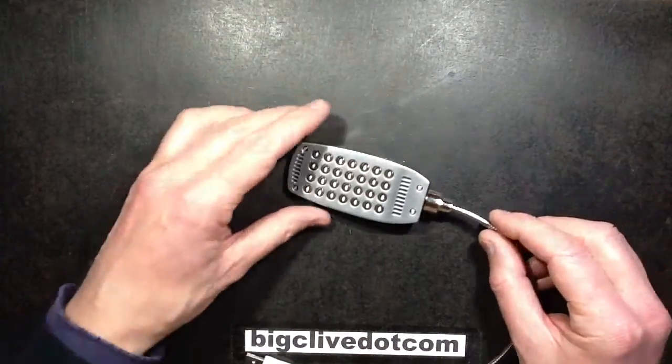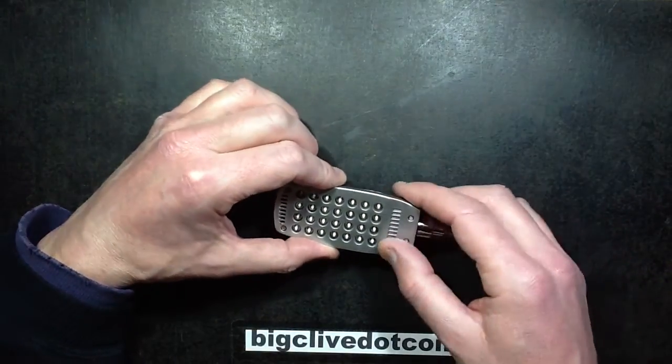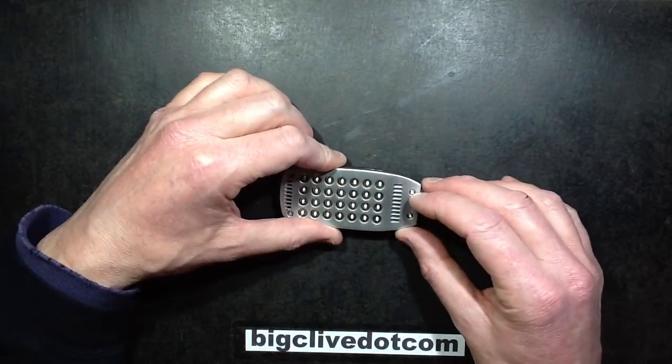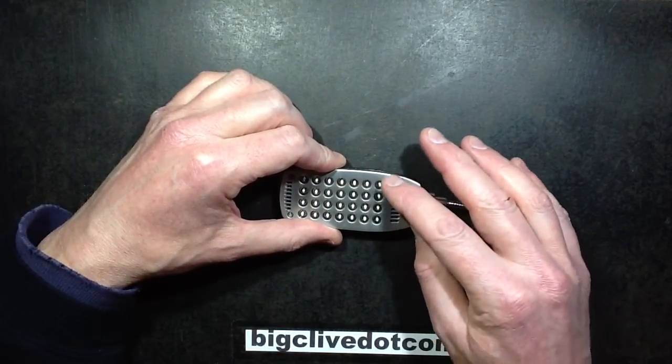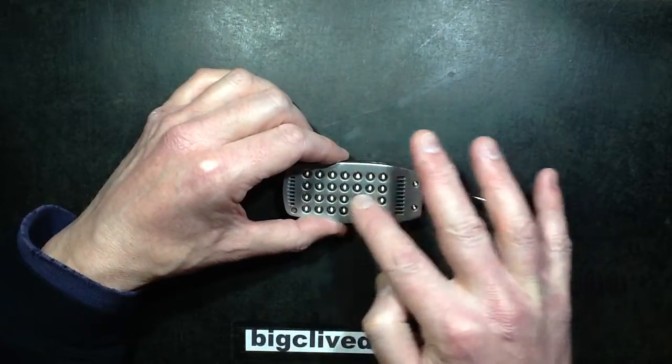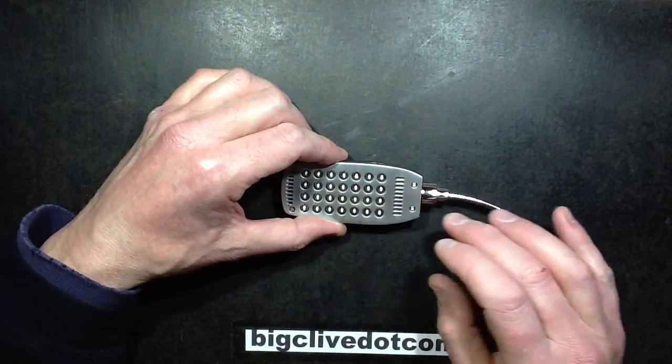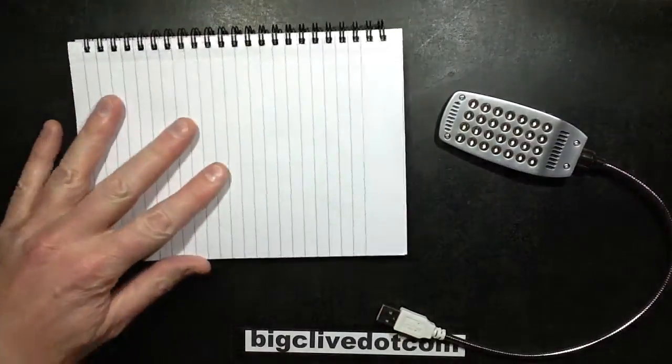So before I open this up, I'm wondering what value of resistors it's got in it and how many resistors. Is it going to be one resistor for all the lamps in parallel, or are they going to be divided into two banks, or four banks, or is it going to be one resistor per LED which is extremely unlikely? But anyway, let's do the maths before I pop the lid.